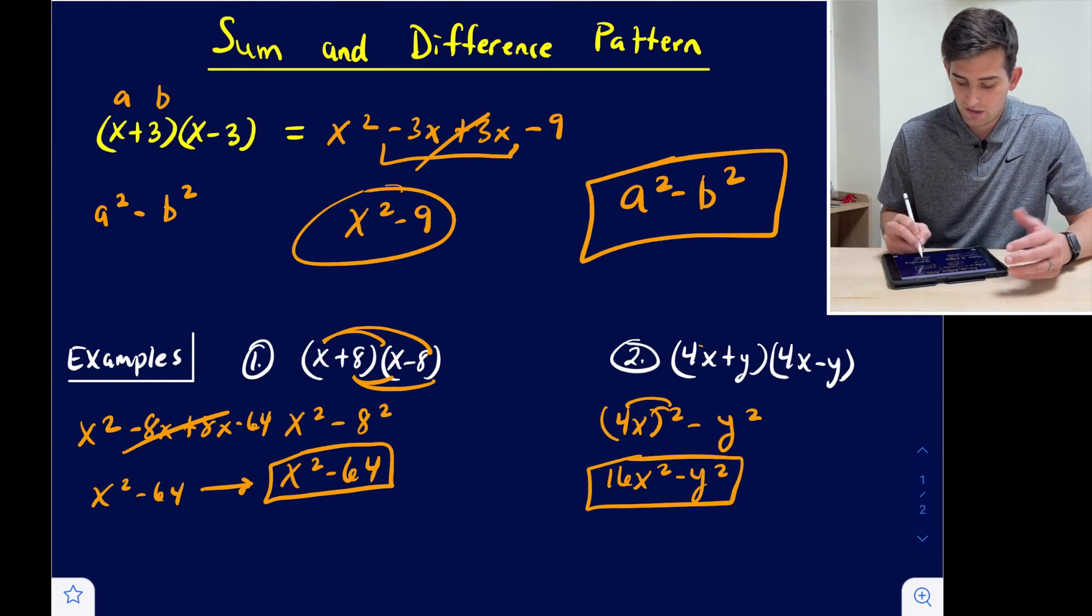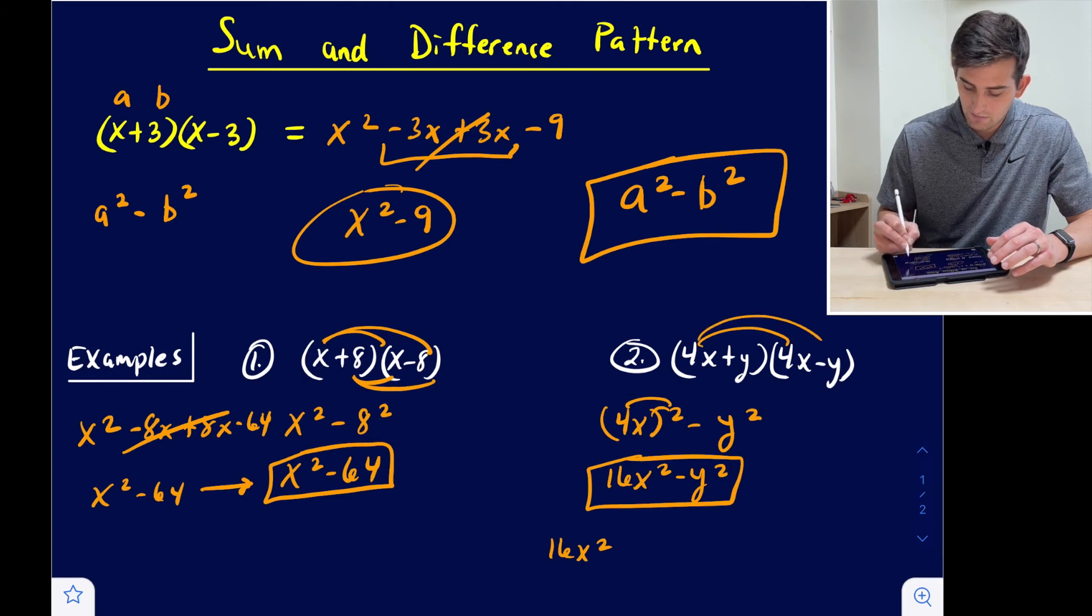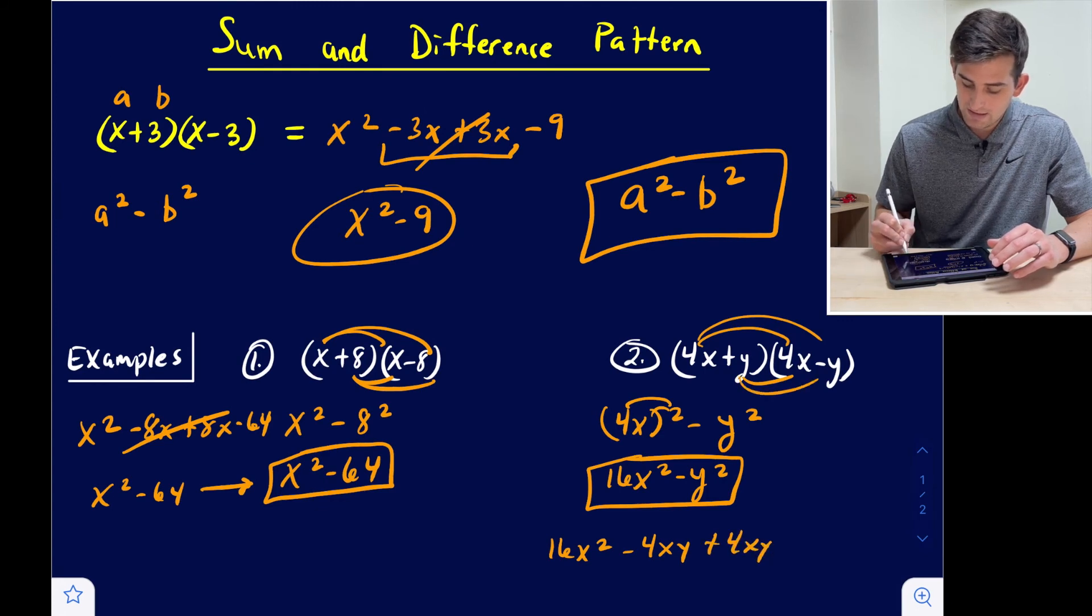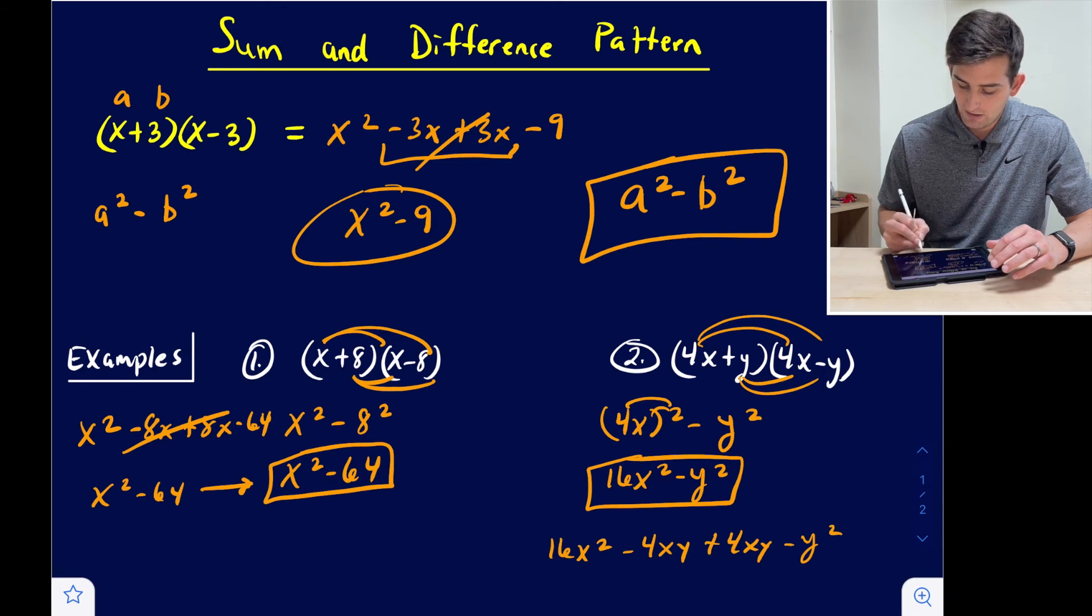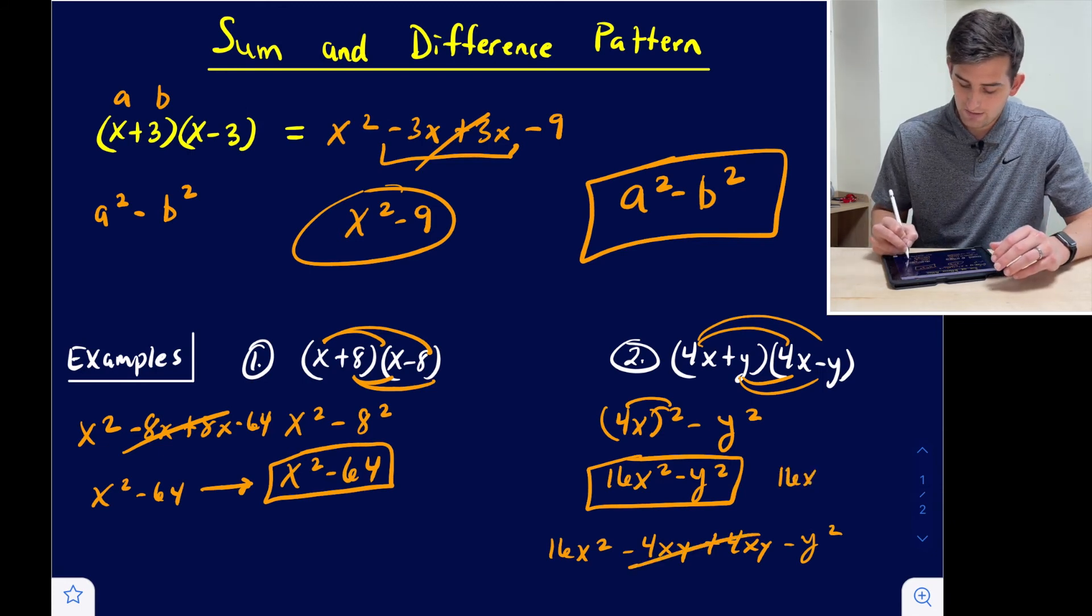We could check by foiling. 4x times 4x would be 16x squared, 4x times negative y would be minus 4xy, then y times 4x, so plus 4xy, and lastly y times negative y would be minus y squared. Our terms in the middle cancel out, so we are left with 16x squared minus y squared.